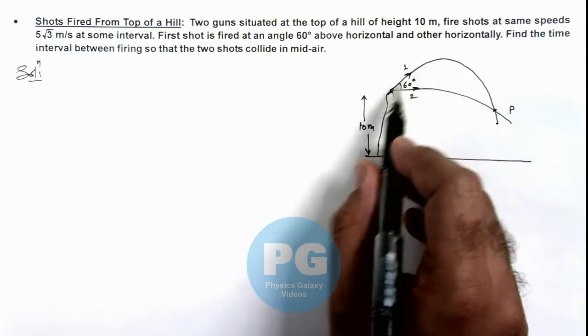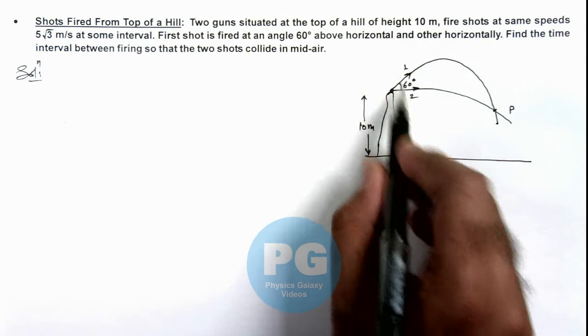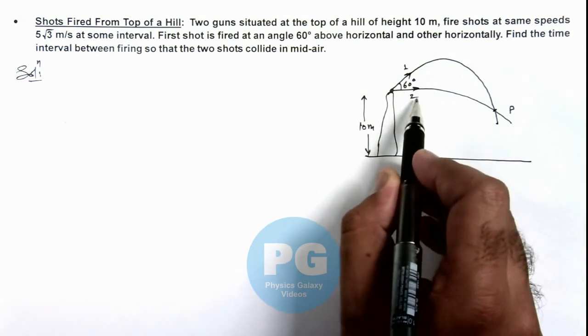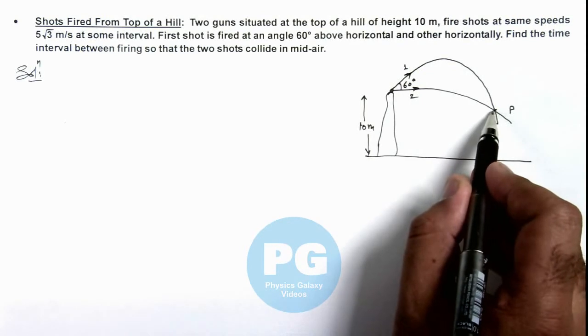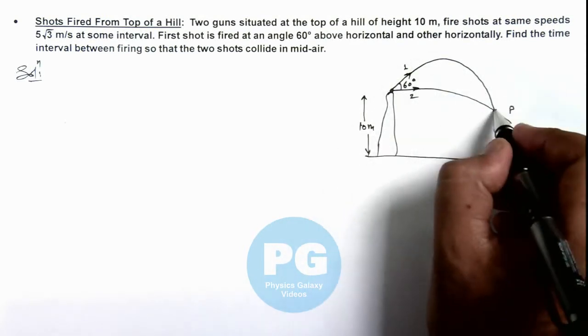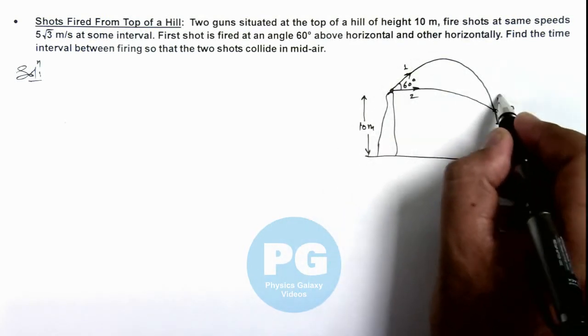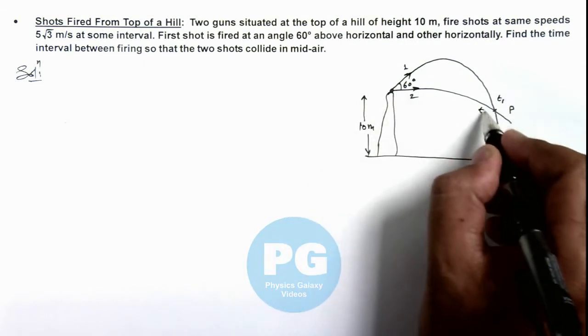Then it means 1 is fired a little bit early compare to the second shot so that their time difference is such that they will collide at point p. Say if the first one reaches point p in time t1 and the second one takes time t2 in reaching point p.